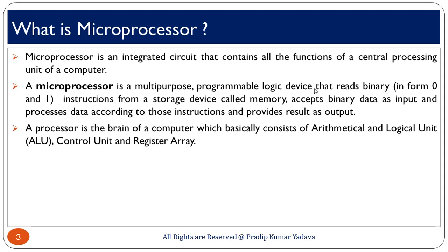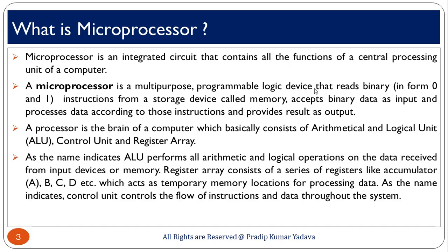A processor is the brain of a computer, which basically consists of an arithmetic and logic unit, a control unit, and a register array. The arithmetic and logic unit is where all arithmetic and logical operations are performed. The control unit is used to control all the processes which happen inside the microprocessor. The register array is a collection of registers — registers A, B, C, D, E, H, L — used to store data temporarily. The ALU performs all arithmetic and logical operations on data received from the input device or memory. The control unit controls the flow of instructions and data throughout the system.